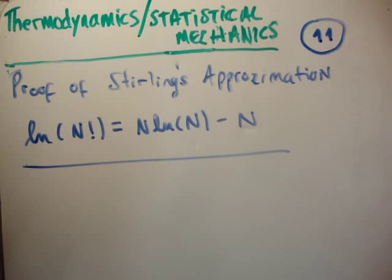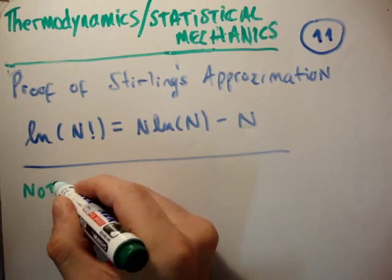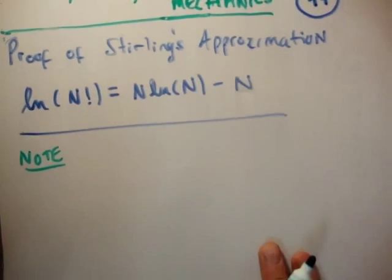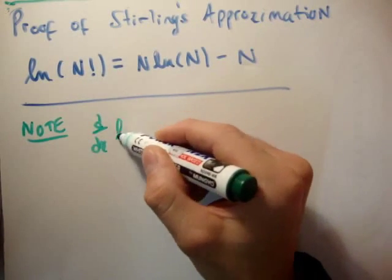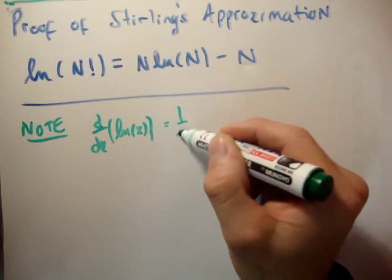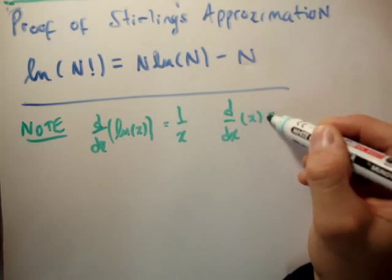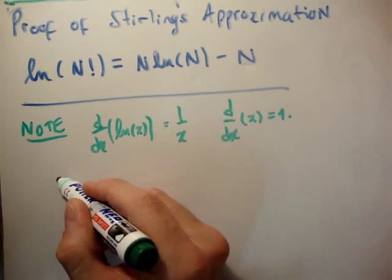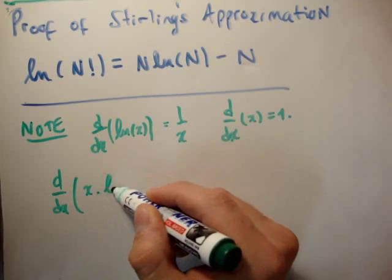The proof is basically about observations and comparing things, and realizing that you have the same thing written in two different ways. So let's note the following derivatives: if we take the derivative with respect to x of the natural logarithm of x, we simply get 1 over x. And if we take the derivative with respect to x of x, we get 1. So let's apply the product rule and get the derivative with respect to x of x times the natural logarithm of x.